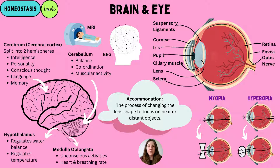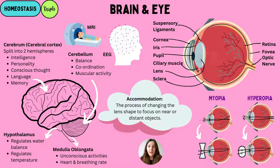Everyone's eyes have a process called accommodation — the process of changing the lens shape to focus on near and distant objects. However, sometimes some people's eyes don't do this accurately and corrective lenses are needed. There are two conditions to know: myopia and hyperopia. Myopia is known as short-sightedness — the eyeball is elongated and the lens is too thick and curved, so people need concave replacement lenses. The light converges before the retina, and a concave lens refracts it correctly to the retina.